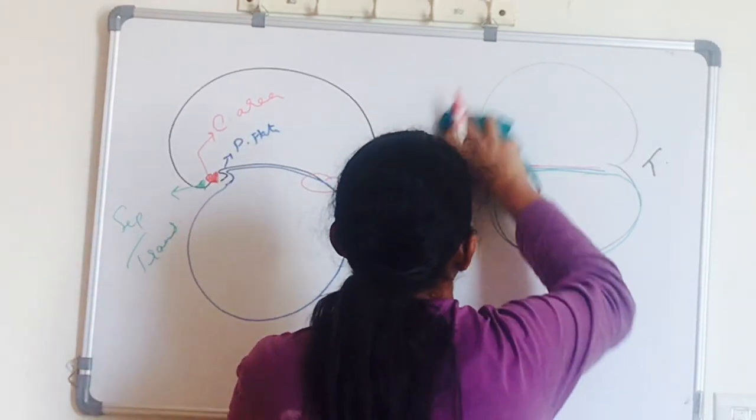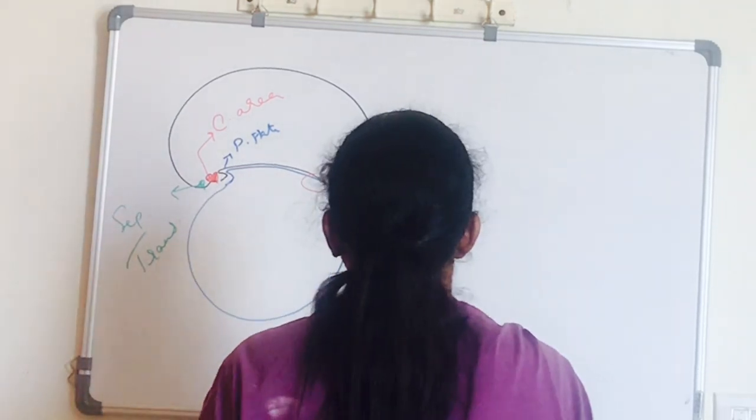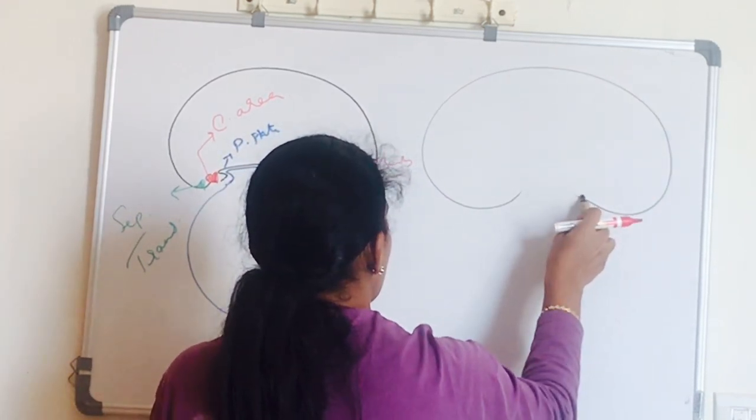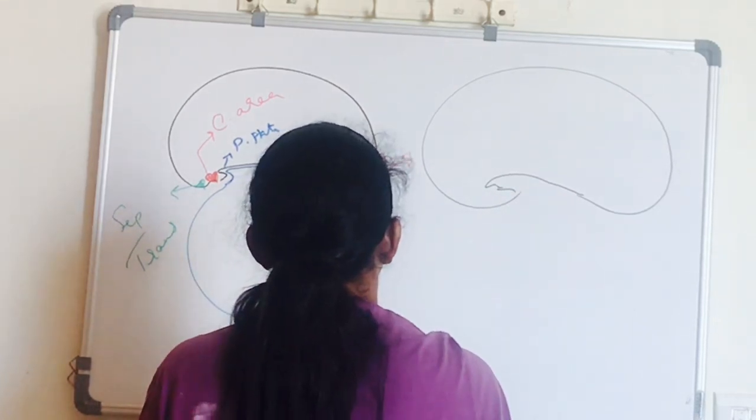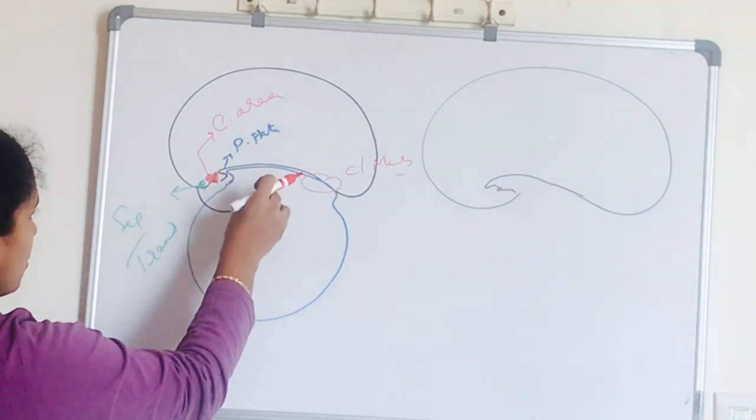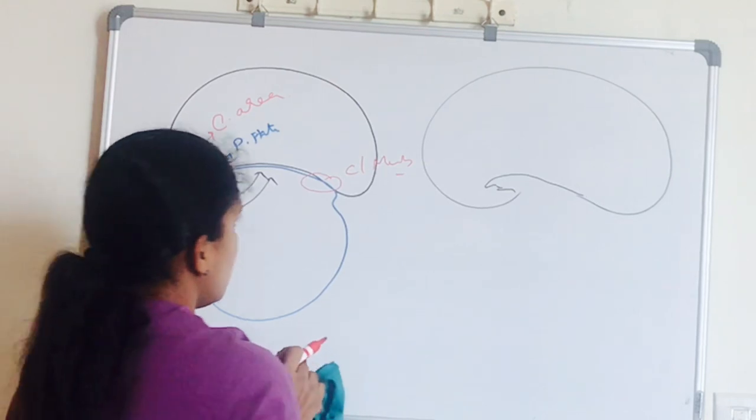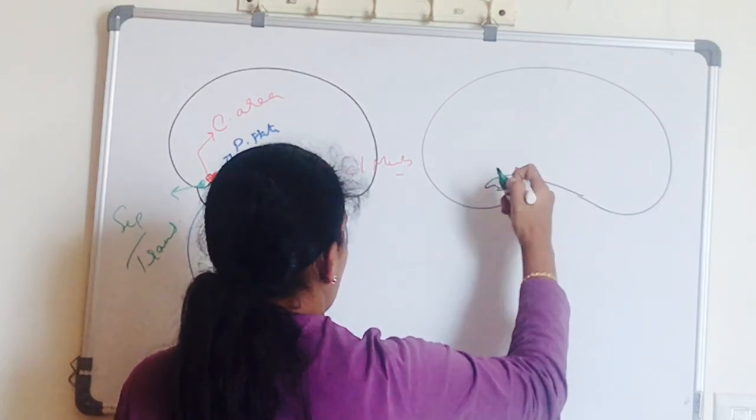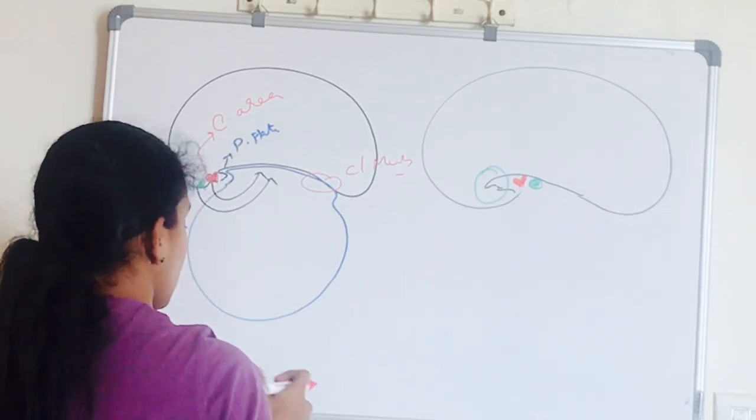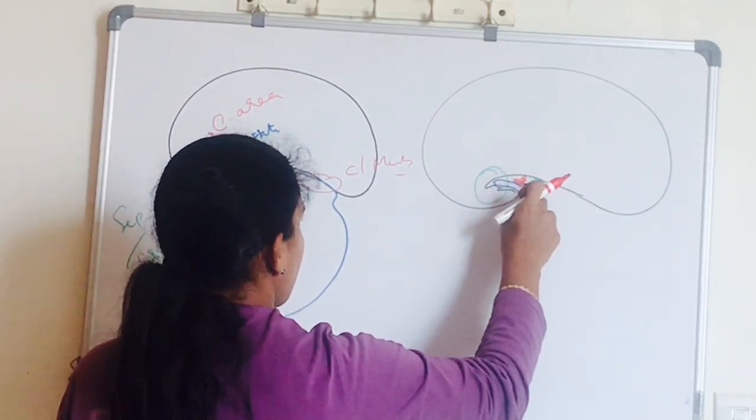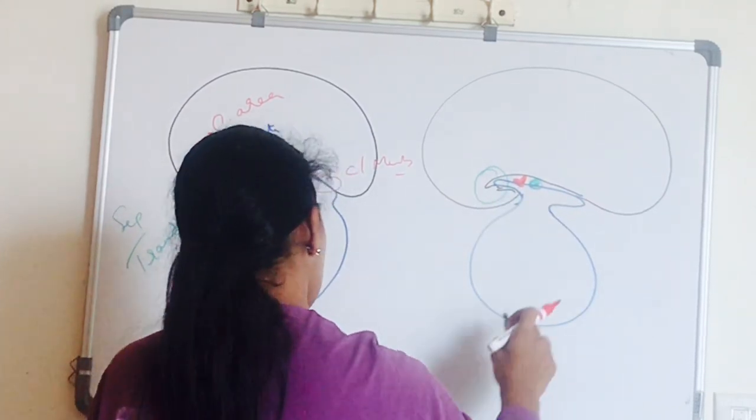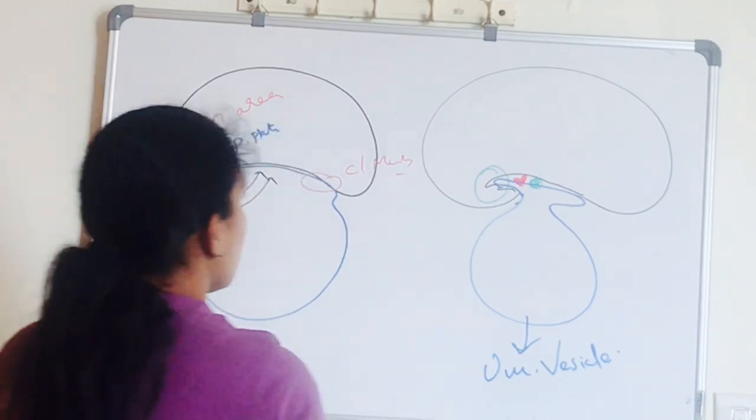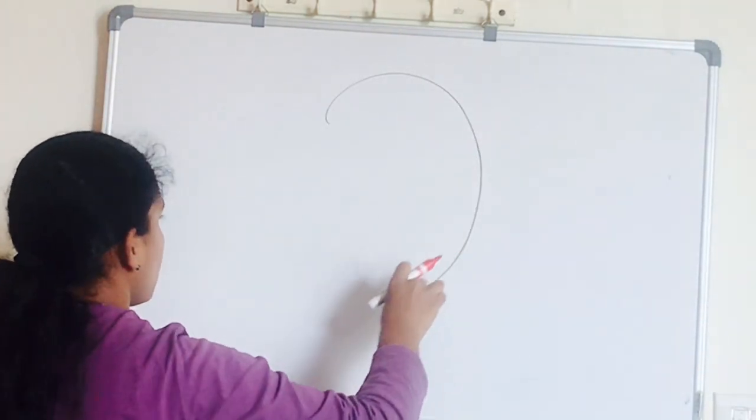Now with the formation of head fold, the septum transversum, which was the most cranial structure in the embryonic disc, now lies caudal to the heart. Later this develops into diaphragm and liver. So this pericardial cavity with the heart, it comes to lie to the ventral side of the embryo. And the region of the prochordal plate now forms the buccopharyngeal membrane or oral membrane. And this is definitive yolk sac, also called umbilical vesicle.